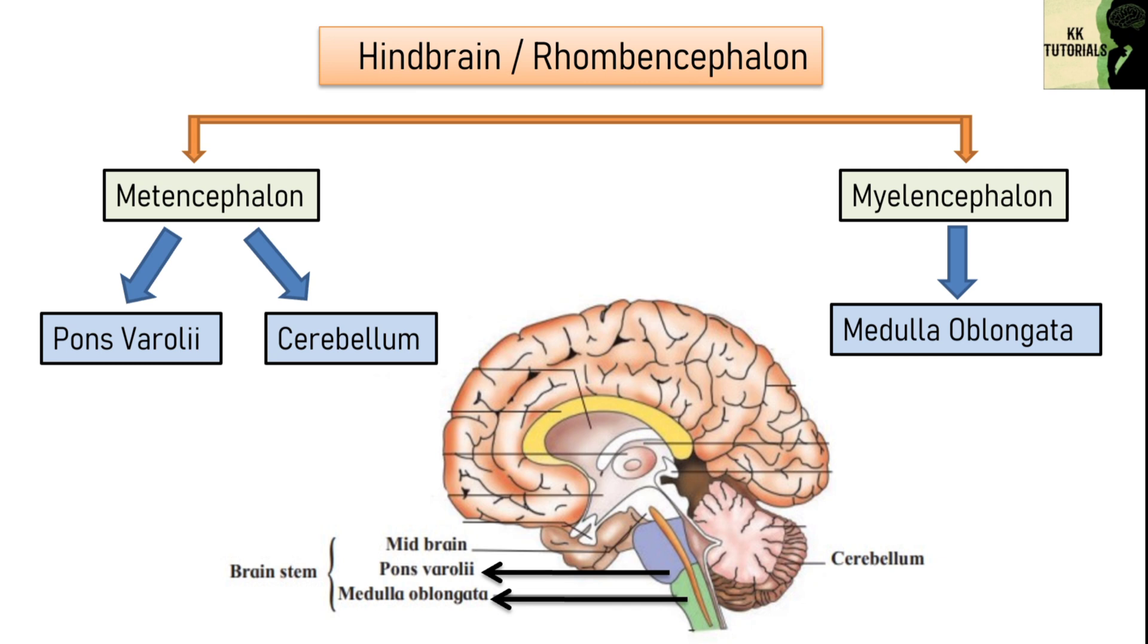Brain stem consists of midbrain, pons and medulla and continues up to spinal cord. The cerebellum is second largest part of the brain and consists of two lateral hemispheres and a central vermis.